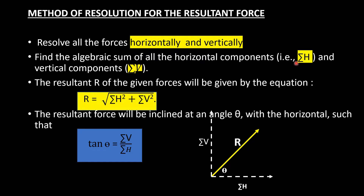We will take sigma H and sigma V. When we do the horizontal component, we will take the sum of the horizontal component. The resultant is the vertical component. This is the second step — the resultant magnitude. The formula is R equals the square root of sigma H squared plus sigma V squared.